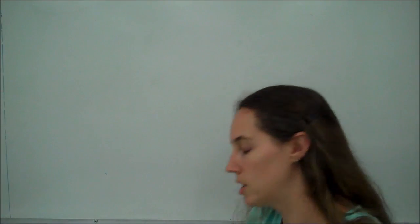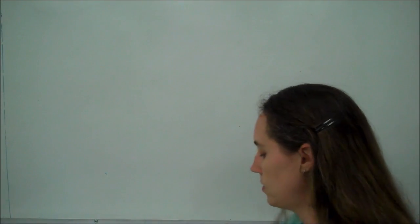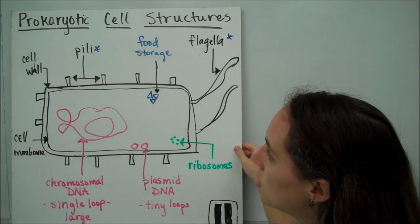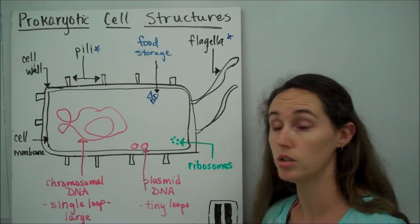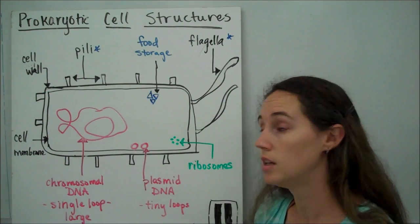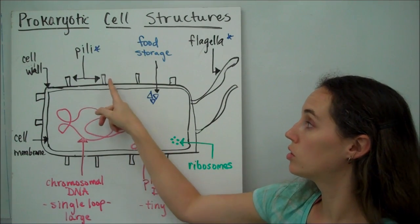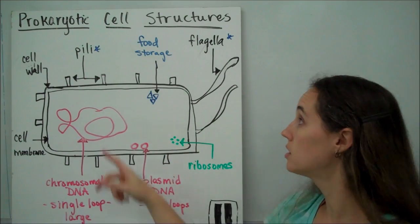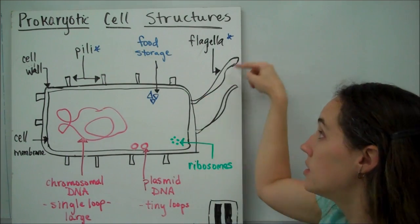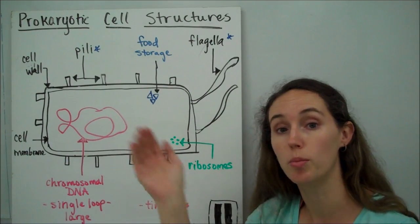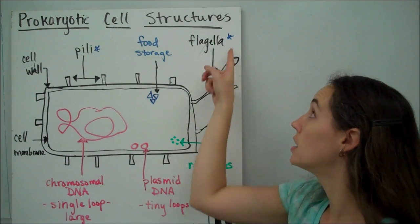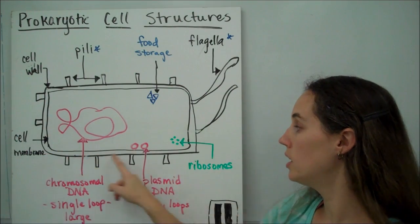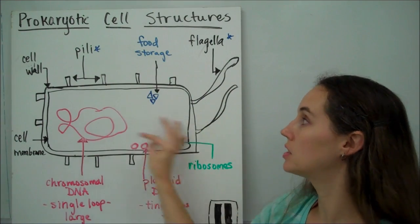Let's first look at prokaryotes. Prokaryotic cell structures include a sturdy cell wall, and on the outside of that cell wall are little structures called pili. Some, but not all, prokaryotes have these. There are also flagella, sometimes, on the outside, that move back and forth like this. Sometimes, but not always. Just within that cell wall is a cell membrane, and within the cytoplasm of the cell,